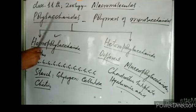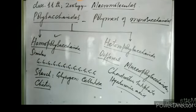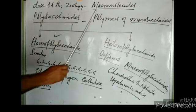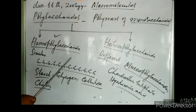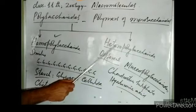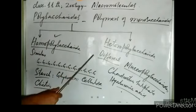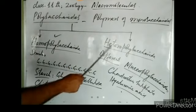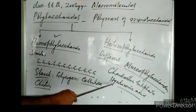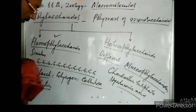Yesterday we discussed polysaccharides, which are polymers of monosaccharides. We classified polysaccharides into two types: homopolysaccharides, formed of similar monosaccharides (including starch, glycogen, cellulose, and chitin), and heteropolysaccharides, formed of different monosaccharides. Heteropolysaccharides include chondroitin sulfate, hyaluronic acid, and keratan sulfate — collectively called mucopolysaccharides.